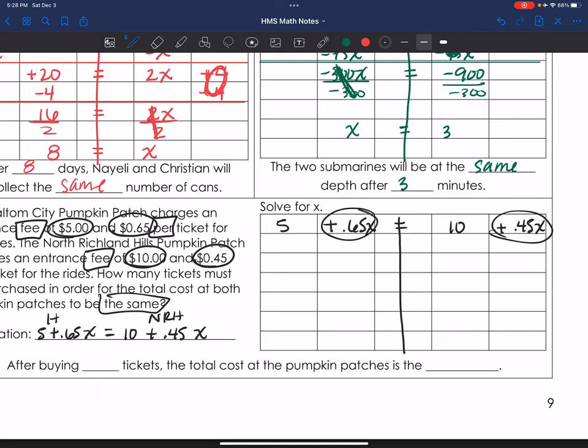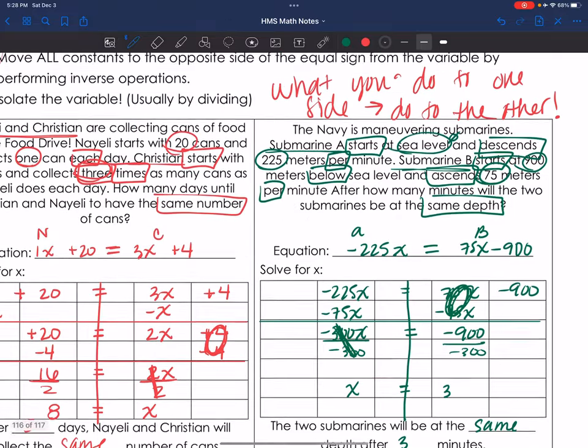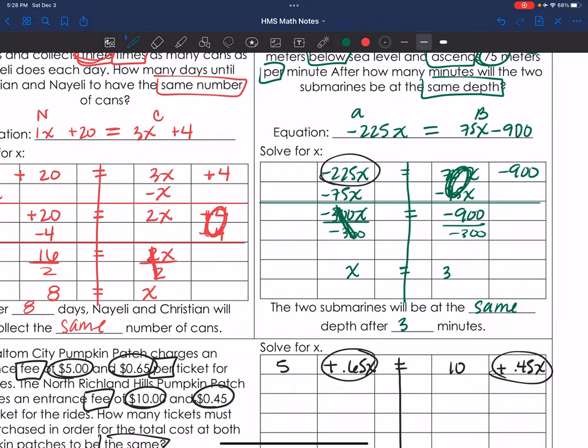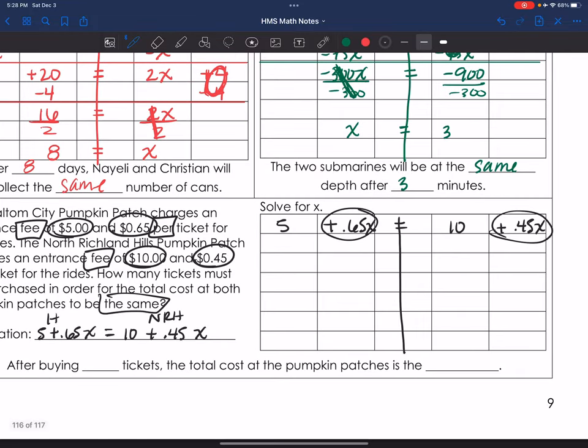I am going to, since I do have two variables here, right, I have two terms with the variables. See up here, I had two terms with the variables, but I only had one term with the constant. Here I have two terms with variables and I have two terms with constants. Okay, I am going to move my smaller variable first by subtracting to both sides, right? Do the opposite. Inverse operations.